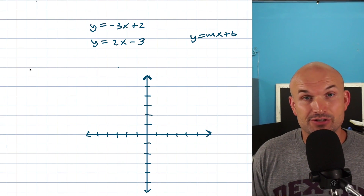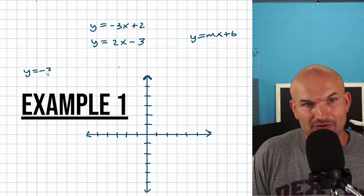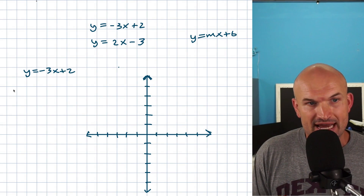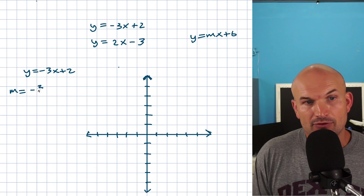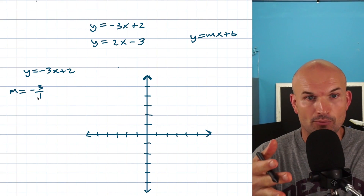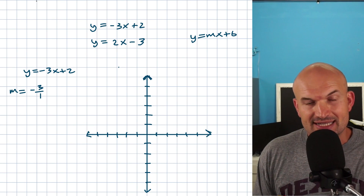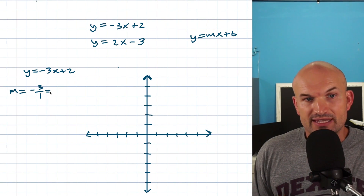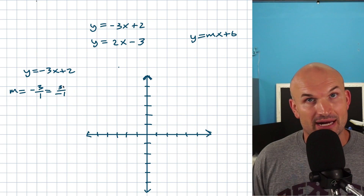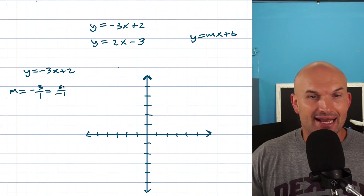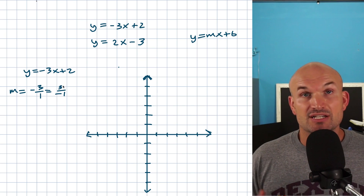In this first example, I have y equals negative 3x plus 2. My slope — the coefficient of x — is going to be negative 3 over 1, because slope represents rise over run, or the change in y over the change in x. Do not put the negative in both the top and bottom, because then you'd actually have a positive slope — a negative divided by a negative is positive.